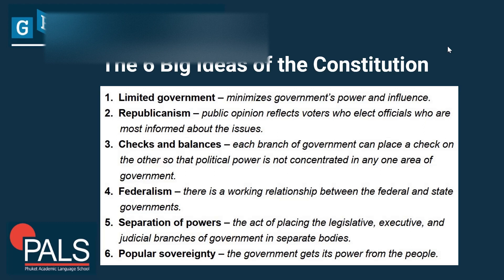They still wanted to hold on to the idea of limited government and minimize government's power and influence over the common citizen, but to a lesser extent than previously. They also espoused republicanism, where public opinion reflects the voters who elect officials who are the most informed about the issues — a way of having the people choose who would make the laws for them without having to know everything required to do it themselves. Checks and balances meant that each branch of the government can place a check on the other, so that political power would not be too concentrated, preventing abuse of power by any one branch.